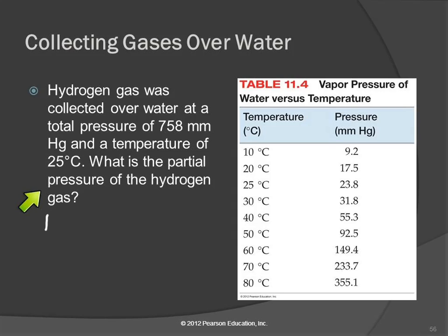So the total pressure is going to equal... What gases do we have here? We've got hydrogen. And any time it says collected over water, you will also have water vapor, plus PH2O. They give us the total pressure. They're asking for the pressure of the hydrogen gas. This one, they're not going to give you. They're going to give you the temperature and send you to a table to go look it up.